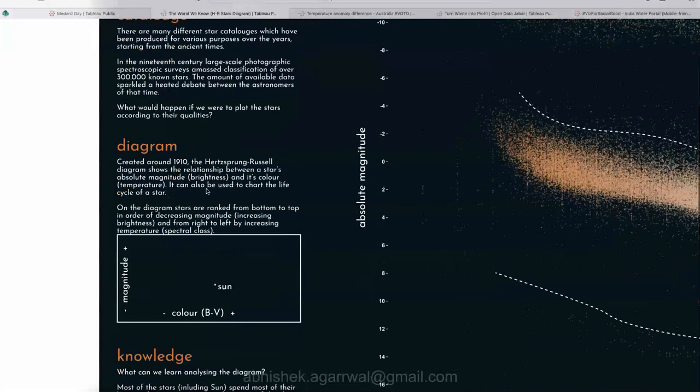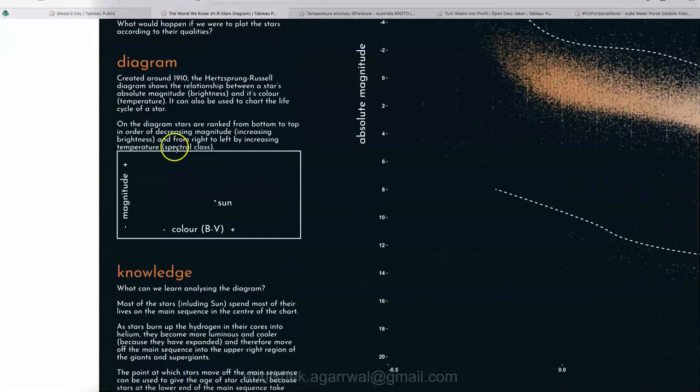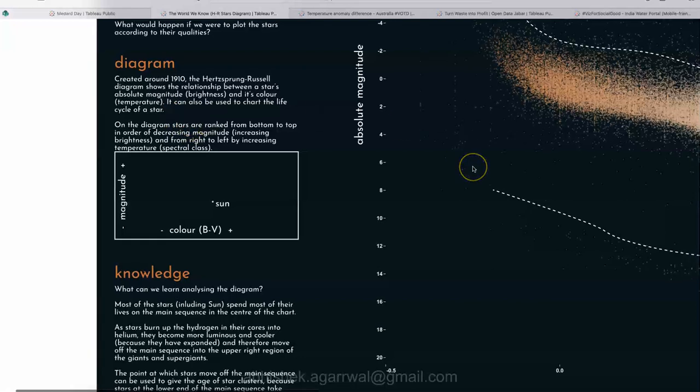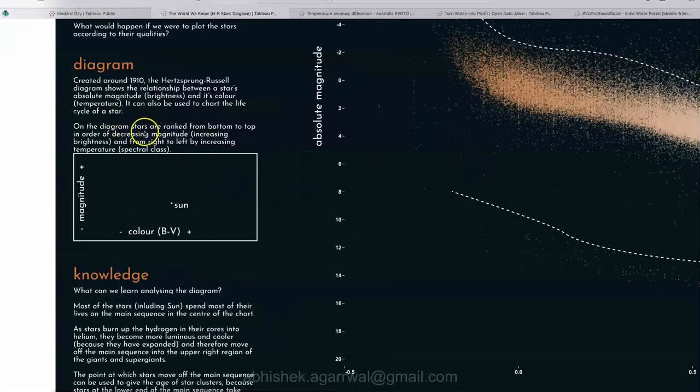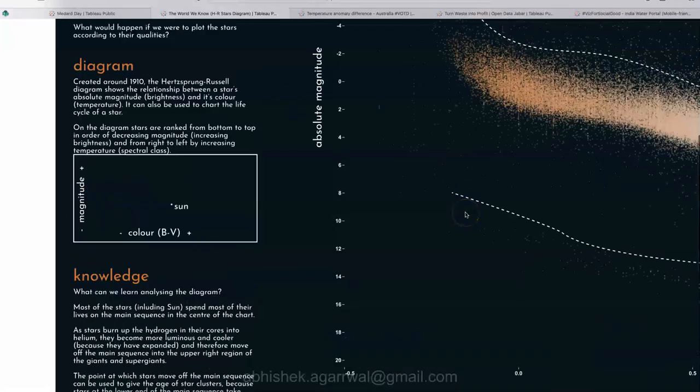There are many different star catalogs which have been produced for various purposes over the years, starting from the ancient time. So this diagram is created around 1910. The Hertzsprung and Russell diagram shows relationship between a star's absolute magnitude, that is the brightness and its color temperature.